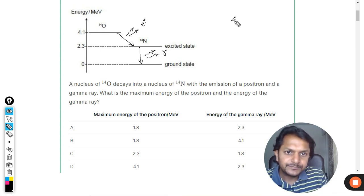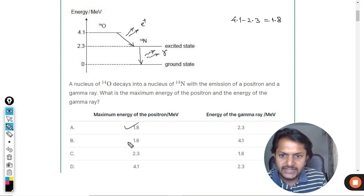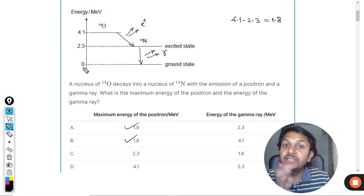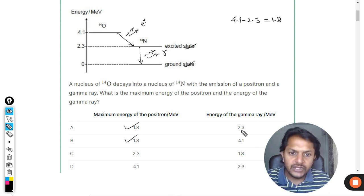Point 3 minus 2.3, which will be 1.8. So this will be the correct answer. And the energy of gamma will be 2.3 minus 0 from the point of view of nitrogen excited and the ground state. So clearly the...